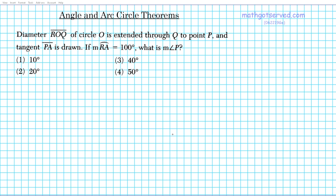Good day students, welcome to mathgotserved.com. In this clip we're going to be taking a look at some angle and arc circle theorems. The question reads: diameter ROQ of circle O is extended through Q to point P and tangent PA is drawn. If the measure of arc RA is 100 degrees, what is the measure of angle P?